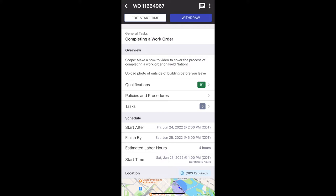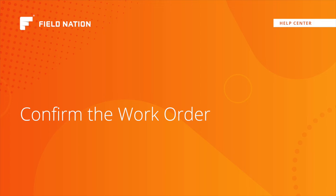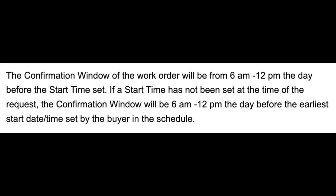You'll see that you are now assigned to this work order, your start time is set, and you just have to wait until the confirmation window begins in order to confirm your assignment. The confirmation window of a work order will be from 6am to 12 noon the day before the start time. If the start time has not been set at the time of the request, the confirmation window will be 6am to noon the day before the earliest start date and time set by the buyer in the schedule range.